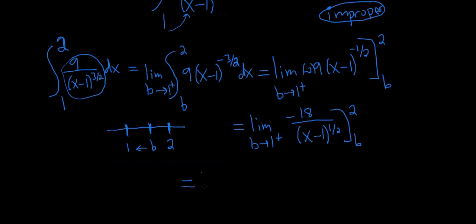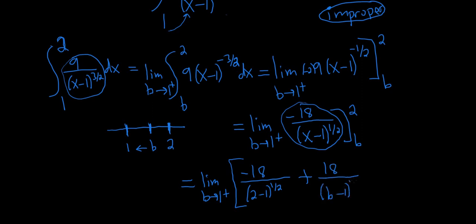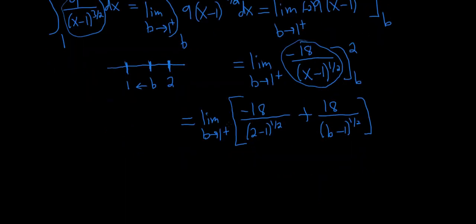So this is equal to the limit as b approaches 1 from the right. And let's go ahead and plug what we have in. So I'm going to put a bracket here. So we have negative 18 over, and then we have 2 minus 1 to the 1 half, plugging in the 2 for the minus. But then you're supposed to put this here. So minus and minus is plus. So this is going to become a plus 18. And then it's b minus 1 to the 1 half.